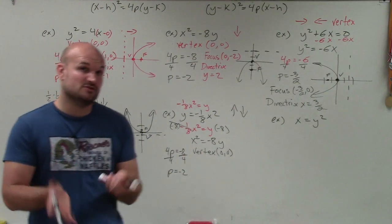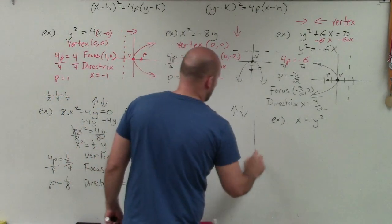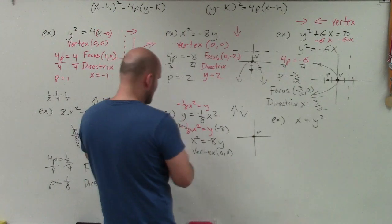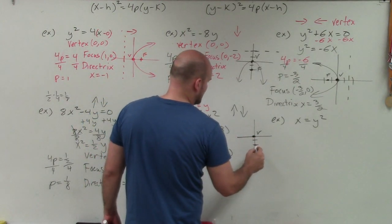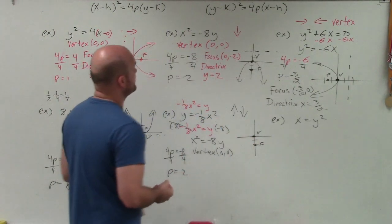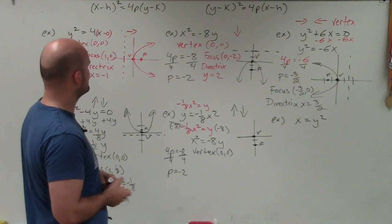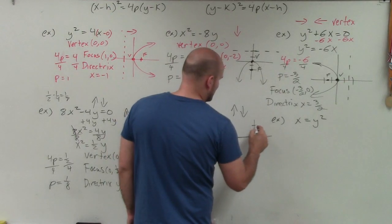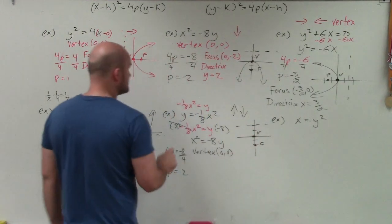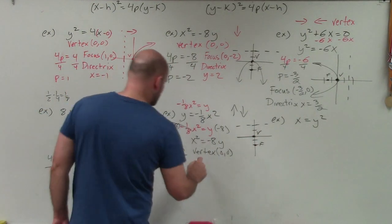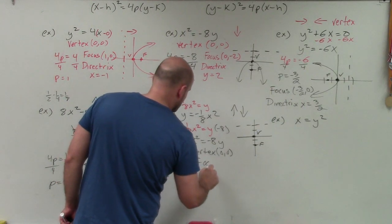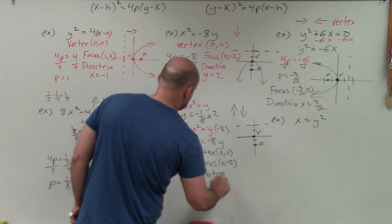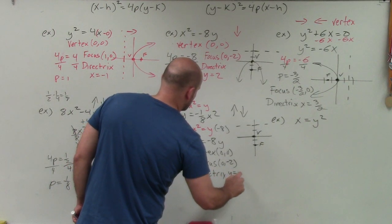Since p is negative 2, the graph opens down 2 units from the vertex at (0, 0). So here's my vertex, p is down 2 — that's my focus, and the directrix is 2 units up. My focus is (0, −2), and my directrix is y = 2. The graph opens downward.